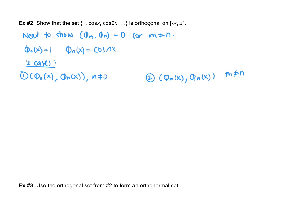In case one, we're doing the inner product of φ_0(x) and φ_n(x). This is the integral from negative pi to pi of one multiplied by cos(nx) dx. Integrating gives us (1/n) sin(nx) evaluated from negative pi to pi, which gives us zero.